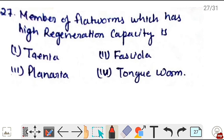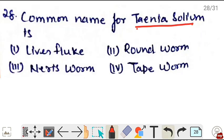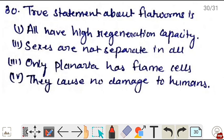Next, member of flatworms which has high regeneration capacity - the highest regeneration capacity is in Planaria. If we cut Planaria into pieces, each piece will develop into an individual organism. Correct is option 3. Next, common name of Taenia solium is - Taenia solium's common name is tapeworm. Correct is option 4. Next, scientific name of liver fluke is - liver fluke's scientific name is Fasciola hepatica. Correct is option 1.